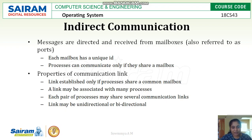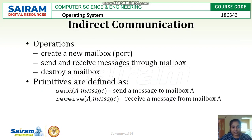A link may be associated with many processes — unlike direct communication, multiple processes can share one link. Each pair of processes may share several communication links; for example, process A can communicate via mailbox ABC but can also be a partner in any other mailbox. The link may be unidirectional or bidirectional. Operations in indirect communication include: creation of a mailbox, sending and receiving messages through the mailbox, and then destroying the mailbox.